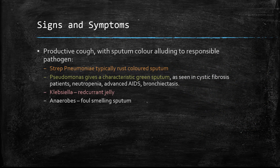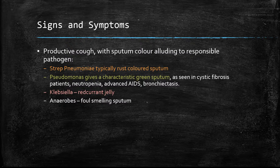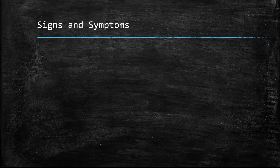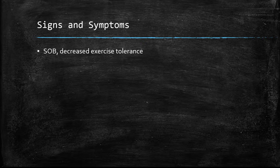What are the signs and symptoms of pneumonia? Patients develop a productive cough, and often the sputum colour can give hints as to what organism is causing it. Strep pneumoniae typically produces rust-coloured sputum. Pseudomonas gives a green sputum, which is very characteristic. Anaerobes usually give foul-smelling sputum. The patient can also present with shortness of breath and decreased exercise tolerance because of compromise of the lung tissues such as consolidation.